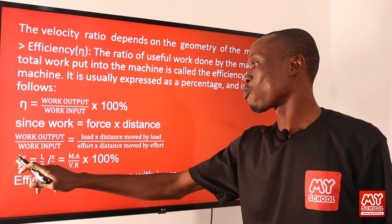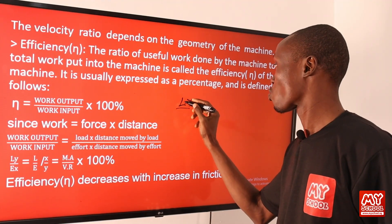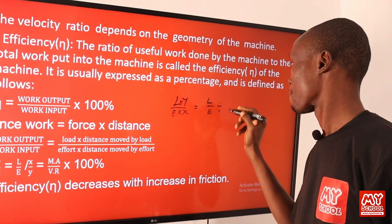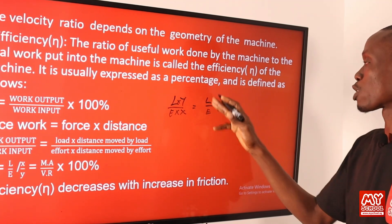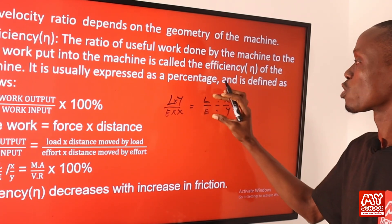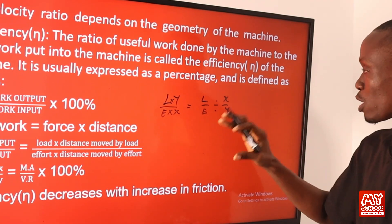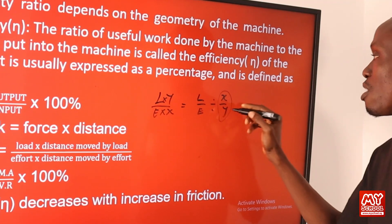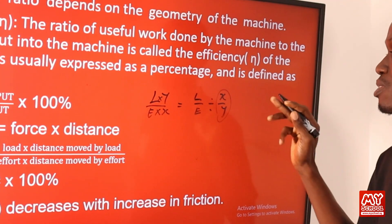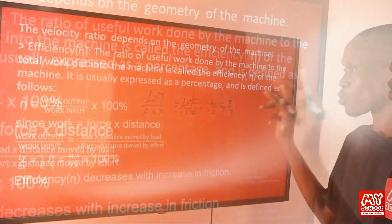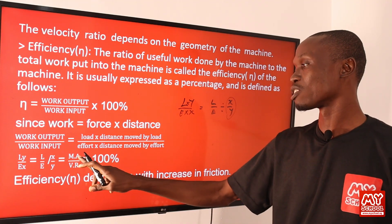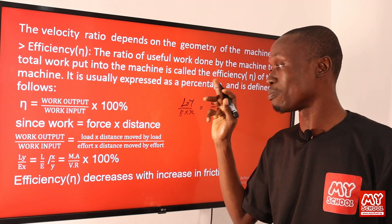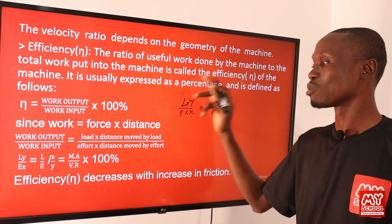Note that LY over EX can be rewritten as L over E divided by X over Y. Because when two fractions divide each other, you keep the first fraction, change the division sign to multiplication, and invert the second fraction. The expression X over Y represents velocity ratio, while L over E represents mechanical advantage or force ratio. Therefore, efficiency of a machine also equals mechanical advantage over velocity ratio, times 100%.